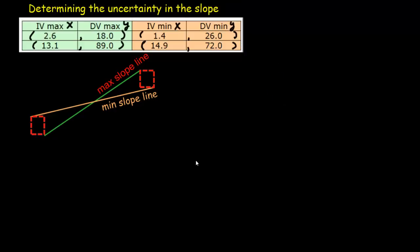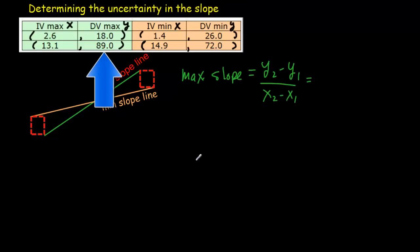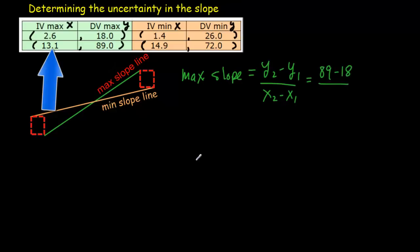Let's do our maximum slope line. Its slope would be the change in y values divided by the change in x values, which would mean our y values are here. So it would be the y values change from 18 to 89. So that would be 89 minus 18. Our x values change from 2.6 to 13.1. And if you calculate that out, you should get a slope of 6.76.